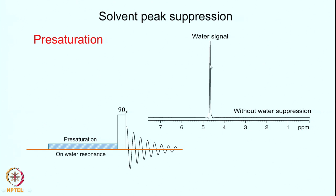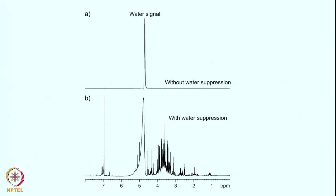The water signal gets saturated while all other signals are not perturbed. This is achieved using a pre-saturation period, where you put a second RF on the water resonance, followed by a 90 degree pulse, and you collect your FID as usual. At this point the water resonance is reduced to a very significant extent, and once you apply the 90 degree pulse along with the other signals, you detect the FID which will not overload the receiver or cause dynamic range problems. The water signal is substantially reduced and you are able to see the other signals of the sample — this is a spectrum of a protein — with good intensities. This is one technique to suppress the water.